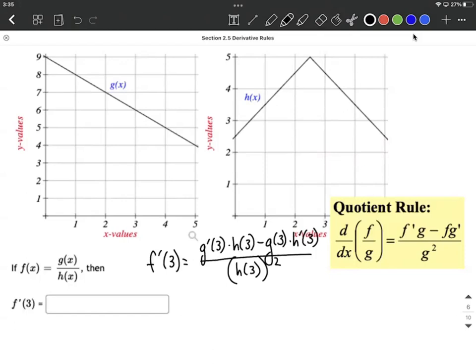All right, now that we've written it out, we can work on filling in one piece at a time. So as we look at this, the first piece we have is g prime of 3.